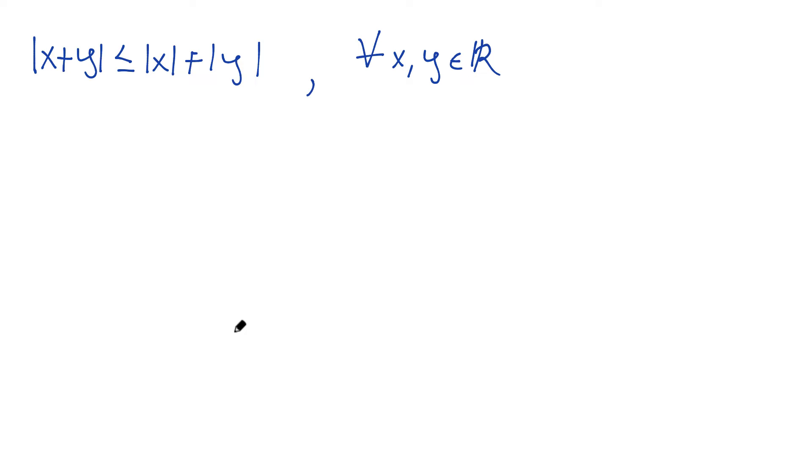Here it is, the famous triangle inequality taught in every intro real analysis class. This inequality will become absolutely invaluable when we're doing proofs with the absolute value function, specifically the epsilon proofs. The absolute value of x plus y is less than or equal to the absolute value of x plus the absolute value of y, for any x and y in the real numbers.